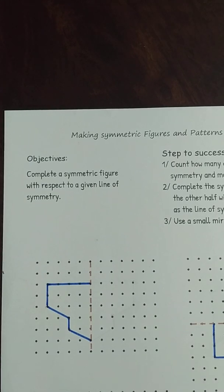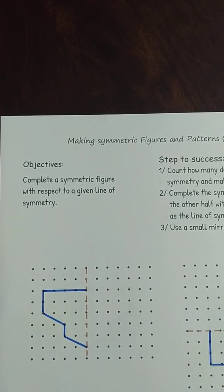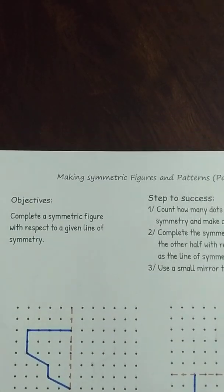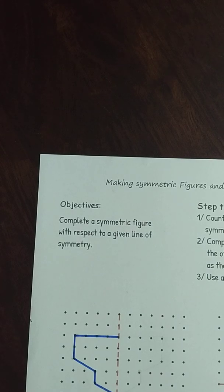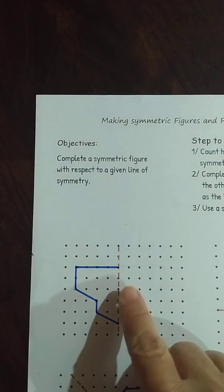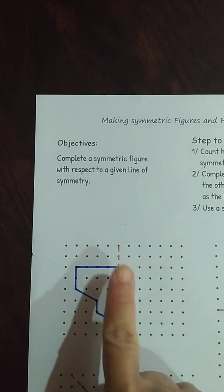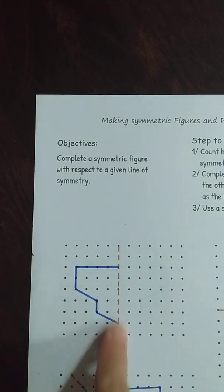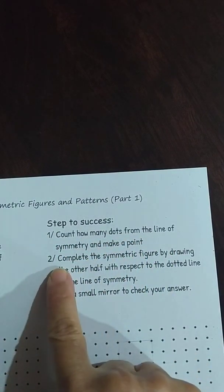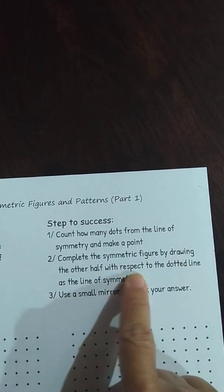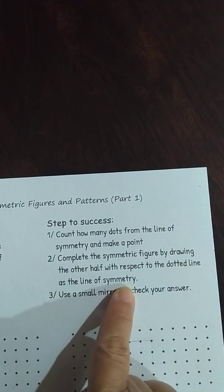Assalamualaikum, good morning. We're going to continue with our lesson on symmetry. Today's topic is about making symmetry figures and patterns, part one. Our objective today is to complete a symmetric figure with respect to a given line of symmetry. Our steps to success: count how many dots from the line of symmetry and make a point to complete the symmetric figure by drawing the other half with respect to the dotted line as the line of symmetry. Then use a small mirror to check your answer.